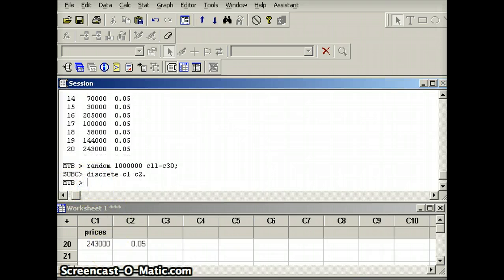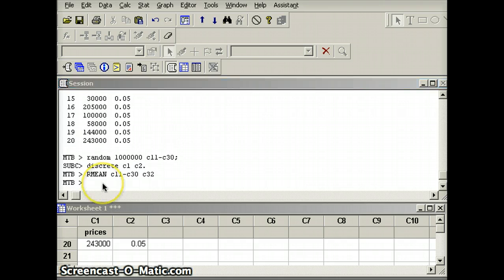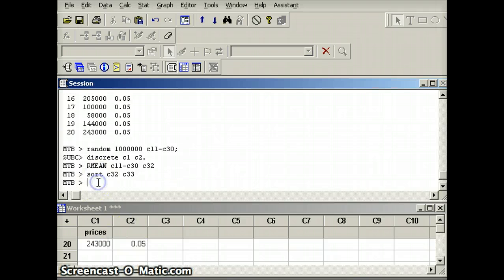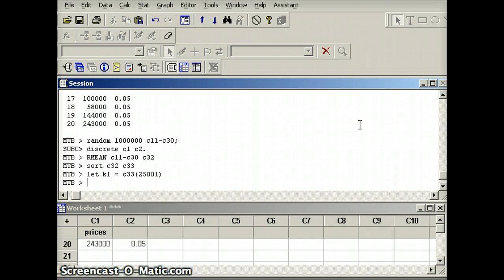The next command will be rmean C11 through C30. Again, 20 numbers in that row. And let's maybe save it in C32 and see what happens there. Okay, next we want to put them in order. So we're going to say sort C32 and let's put that into C33. We're going to say let K1 equal C33 number 25,001. And we're going to say let K2 equal C33 number 975,001. Then I'm going to say print K1 and K2.